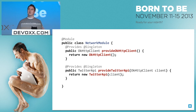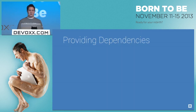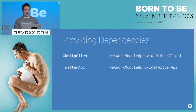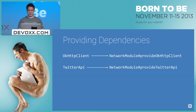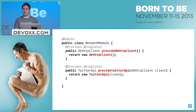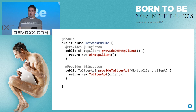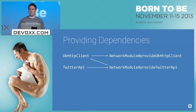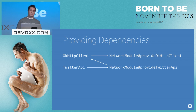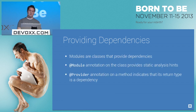Internally, Dagger is going to map between the type and the method that creates that type. So we'll have our OkHttp client and our Twitter API, and Dagger will associate those with the two methods inside this class. The Twitter API method also takes the OkHttp client as an argument. What Dagger's going to do is create a path between the Twitter API method and the OkHttp client type. So whenever a Twitter API is requested, it's going to follow this graph transitively, start from the bottom and work its way up.